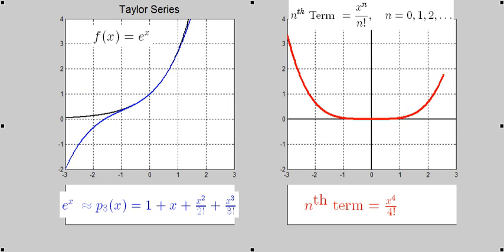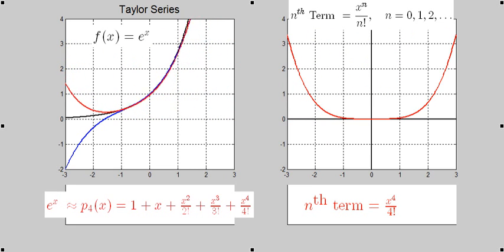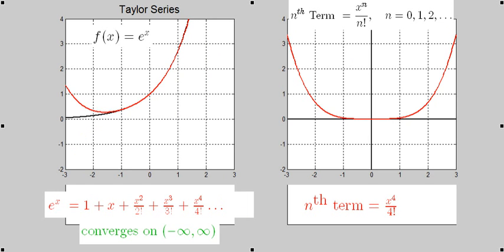Although the series is centered around x equals 0, the interval of convergence is minus infinity to infinity. This means that we could approximate e to the c for any c on the real number line, as long as we added enough terms to the series.